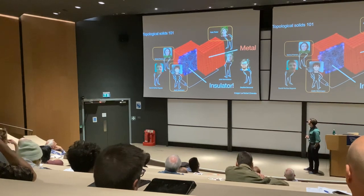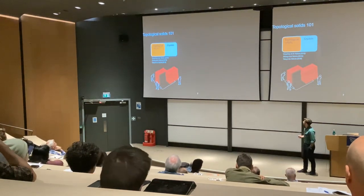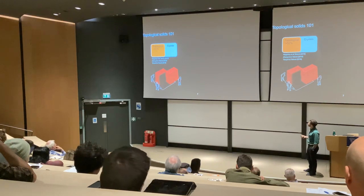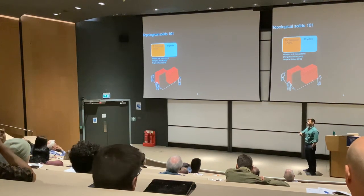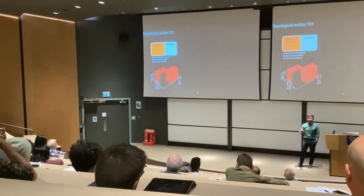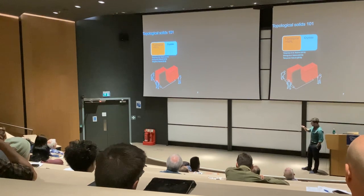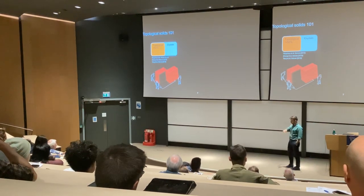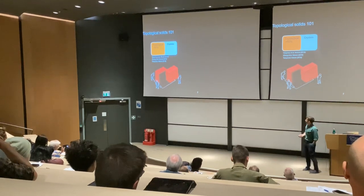Before going into details, I want to say a few more things about topological solids and why you should care about them. It turns out that in the realm of crystals, many materials are predicted to be topological — in fact, more than half. These haven't all been systematically verified experimentally, but there are many that have, based on recent predictions and calculations.